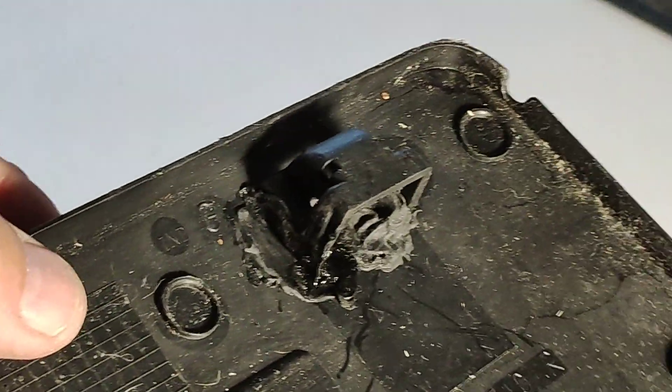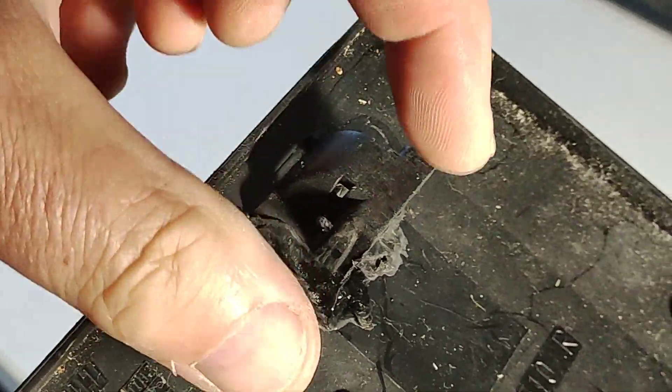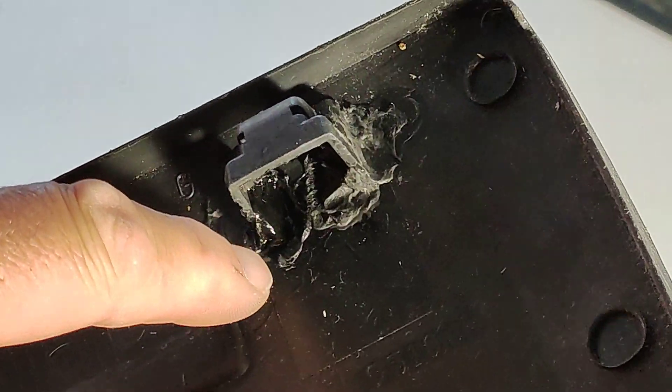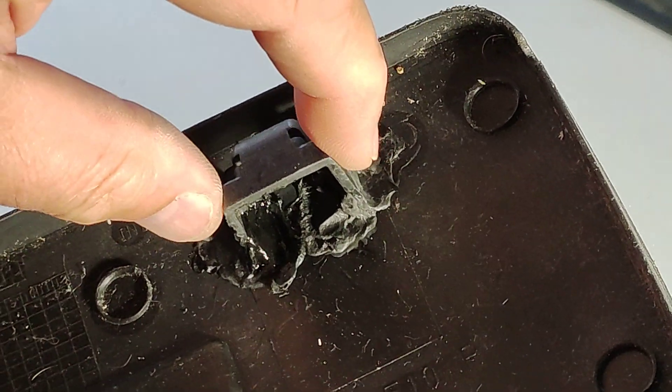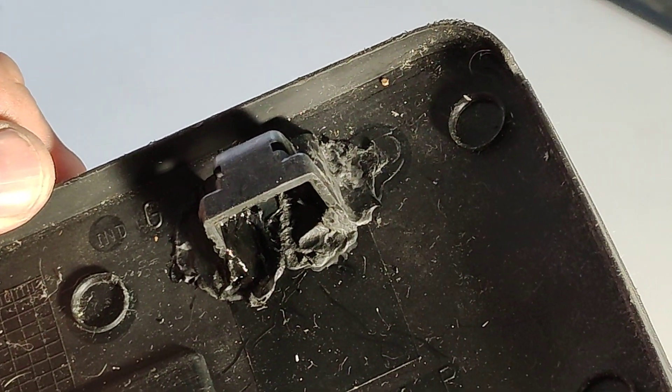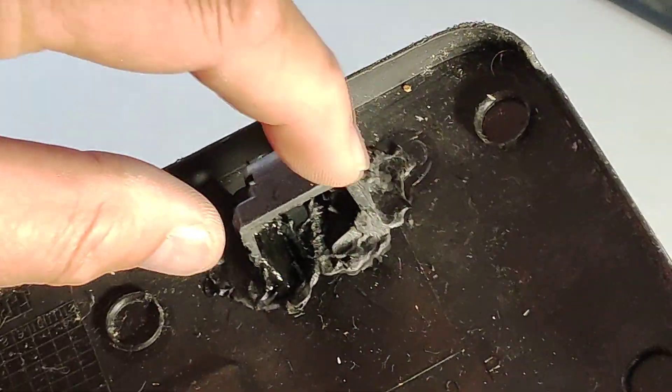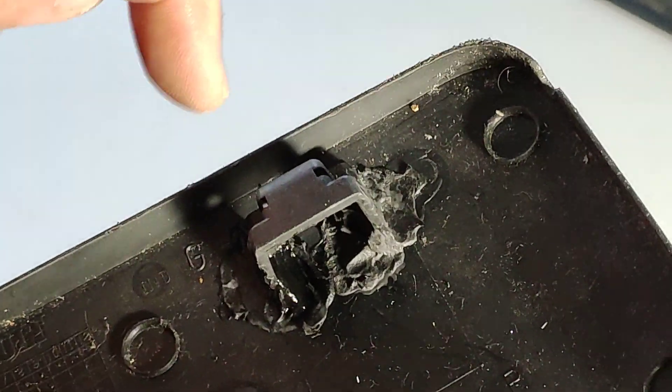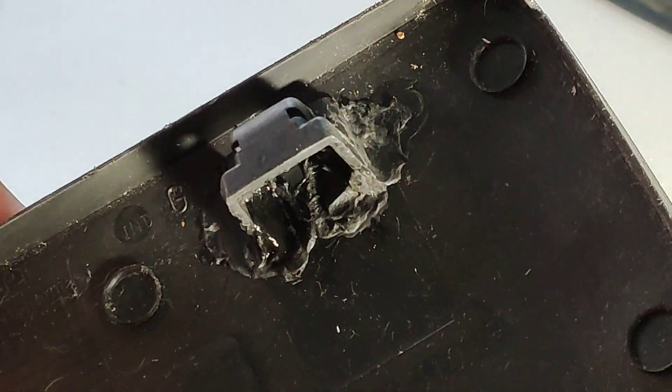And now you can see on the outside it has the same size here, and on the inside there is very much molten plastic which fixes the complete part. And now we can let it cool down a little bit and then we will try if we get the original axle here through this.